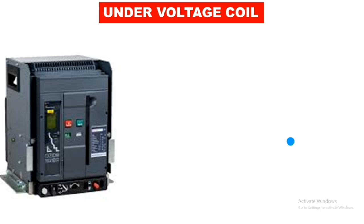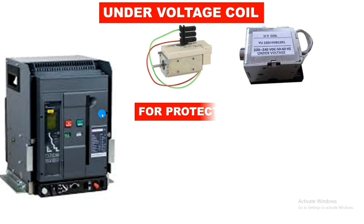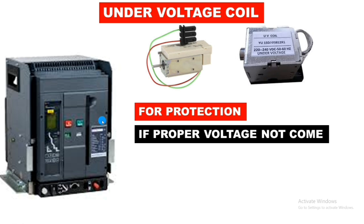The first coil is the under voltage coil — you can see the structure of this under voltage coil here. The under voltage coil may operate at 220 volt or 440 volt. You need to connect the under voltage coil for 440 volt because its main function is providing protection. If any phase is not coming into the ACB — due to a blown fuse or a substation fault — and proper voltage is not coming into the air circuit breaker, then this under voltage coil will trip the ACB.